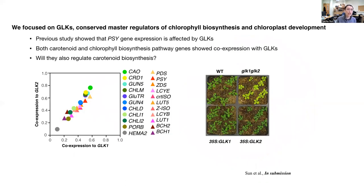We focused on GLK (Golden2-Like) transcription factors, which are conserved master regulators of chlorophyll biosynthesis and essential for chloroplast development. Previous studies show that the PSY gene is affected by GLK transcription factors. Furthermore, we find that both the carotenoid and chlorophyll biosynthesis pathways are highly co-expressed with GLK1 and GLK2. So our question is: will GLK also regulate carotenoid biosynthesis?